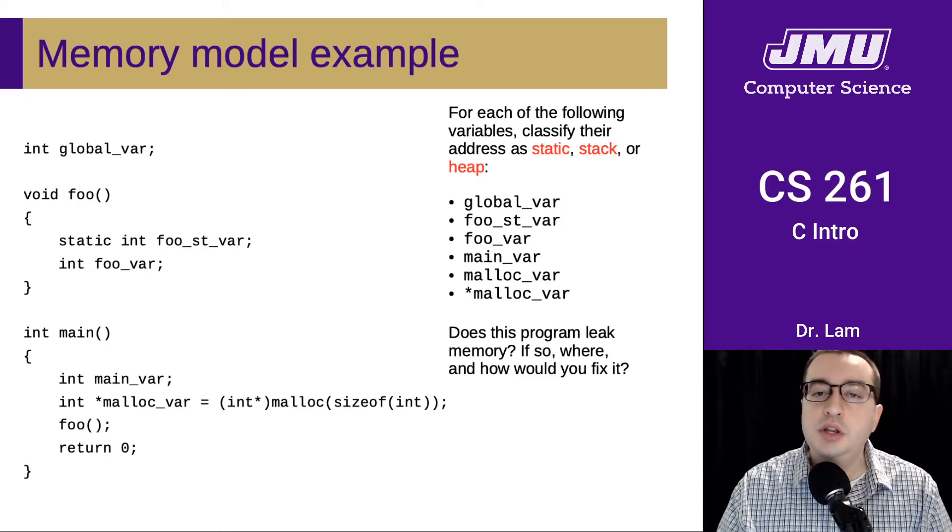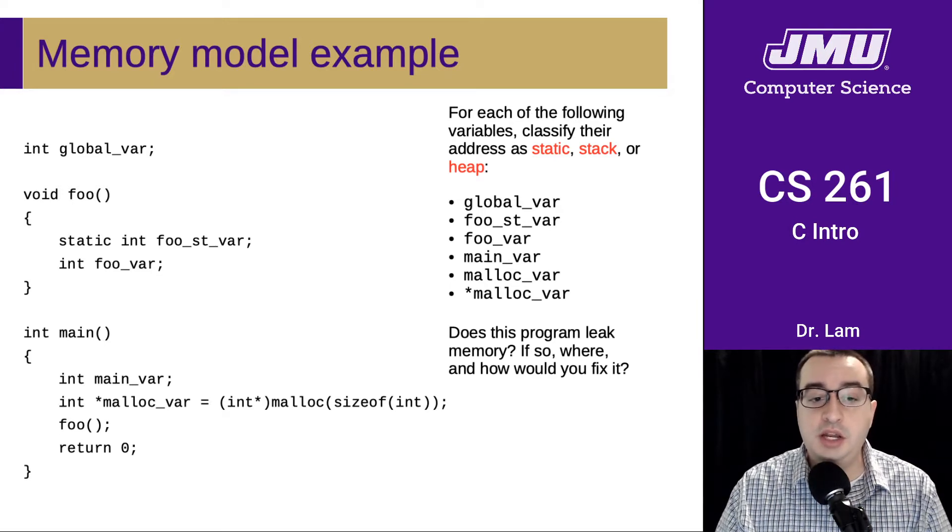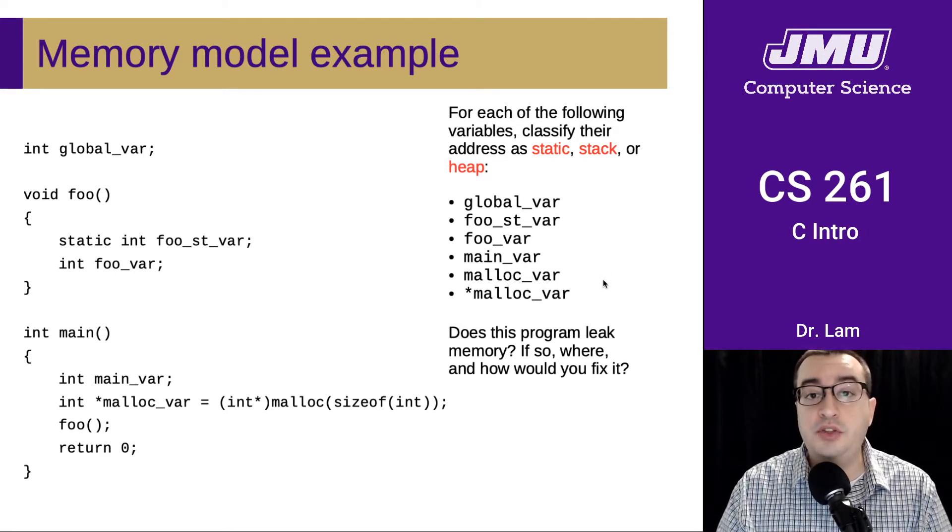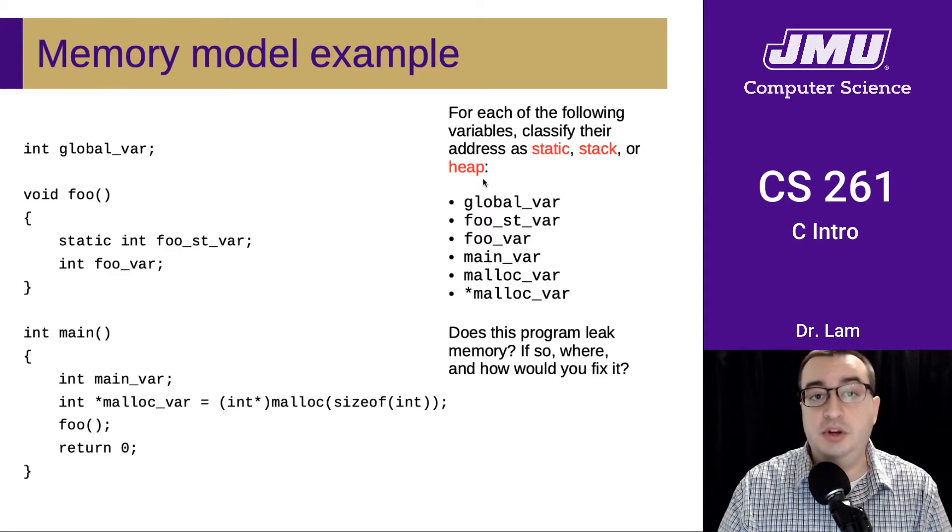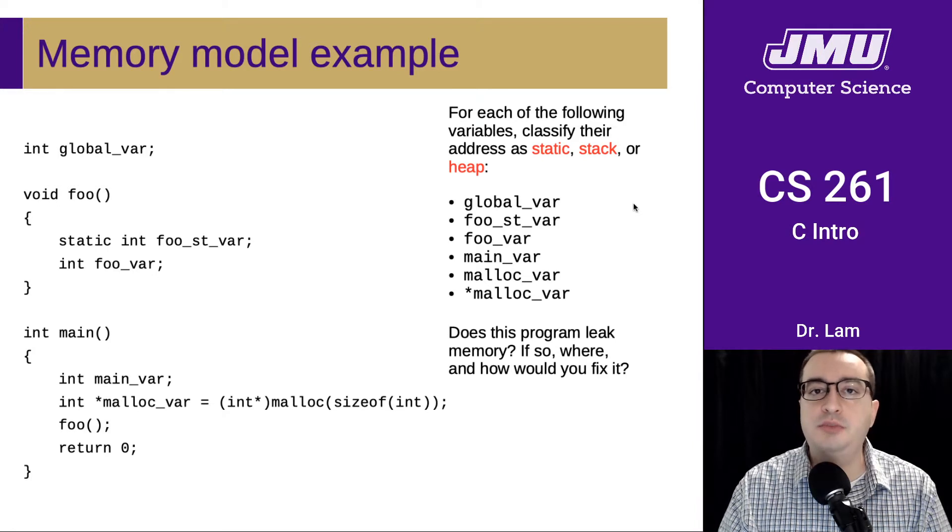Here's a little example to help you think about these things. You should pause the video and take a minute to classify each of these variables here. So here's the list over here. Given the code over here on the left, classify each of these variables according to their location. So where is their address in memory? Is it in the static region, the stack region, or the heap region? And feel free to refer back to the earlier video as you think about these things. But you really should pause the video at this point and see if you can come up with a categorization for each of these variables.